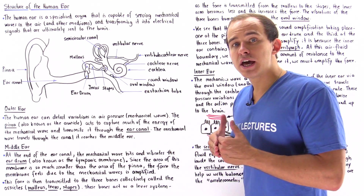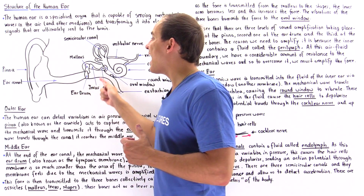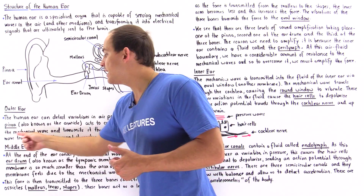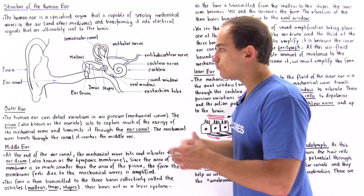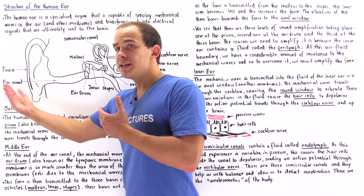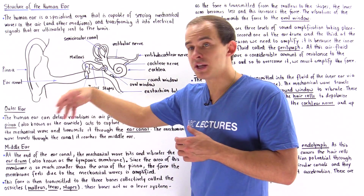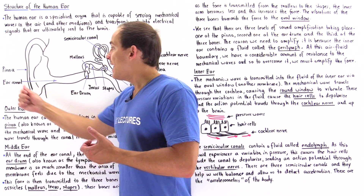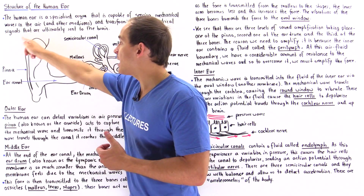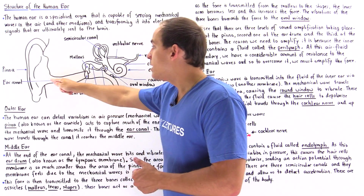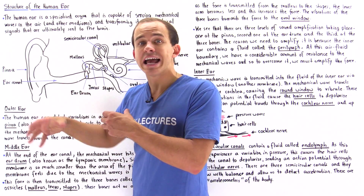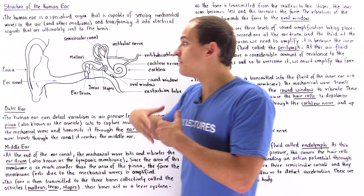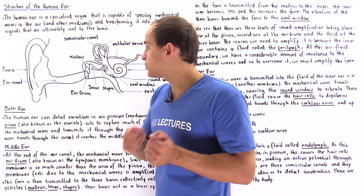The mechanical wave then moves along the ear canal, and towards the end of the ear canal we have the beginning of the middle ear. Some type of disturbance in the air initiates this propagating mechanical wave. It is captured by the pinna and directed into the ear canal, where an amplification process takes place. The pinna amplifies the wave by about a factor of two.